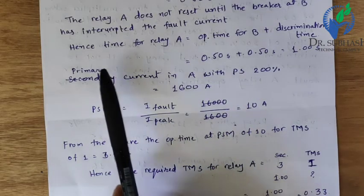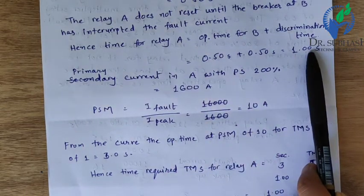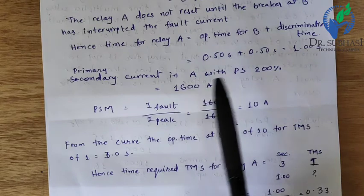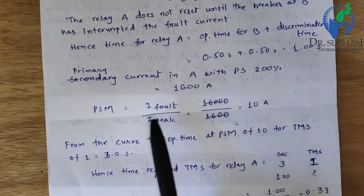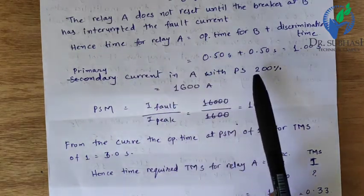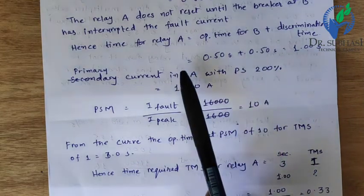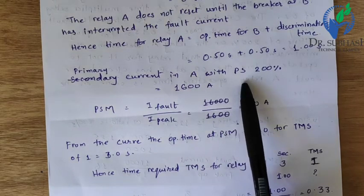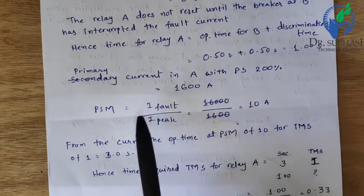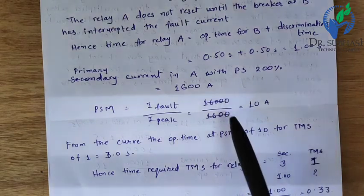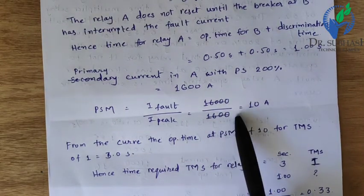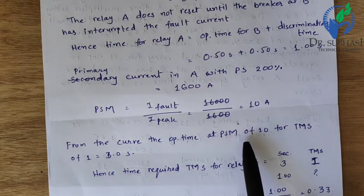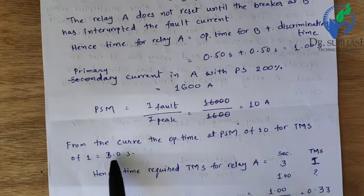The required time for relay A is 1 second. For finding the PSM of relay A with 200% plug setting, the pickup current is 1600 A. PSM = 16,000 / 1,600 = 10. From the curve, at PSM of 10 and TMS of 1, the operating time is 3.0 seconds.